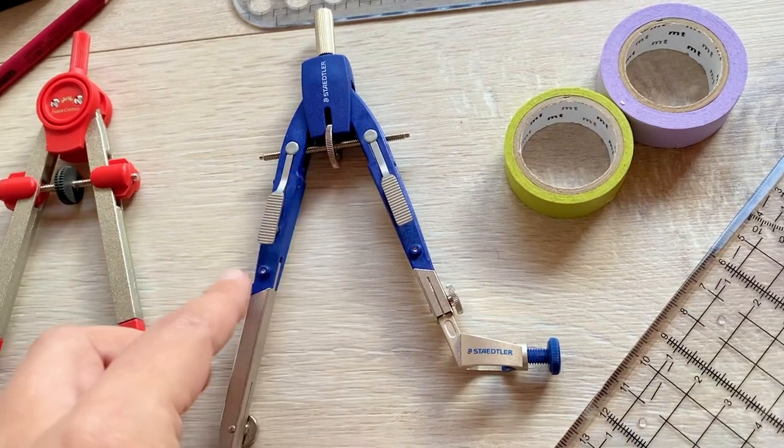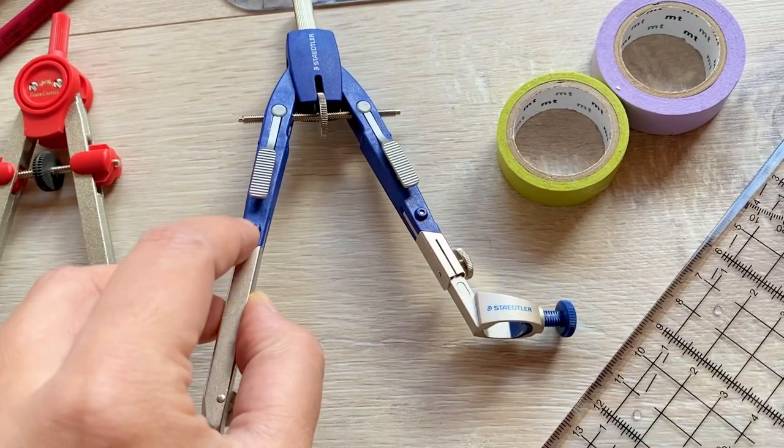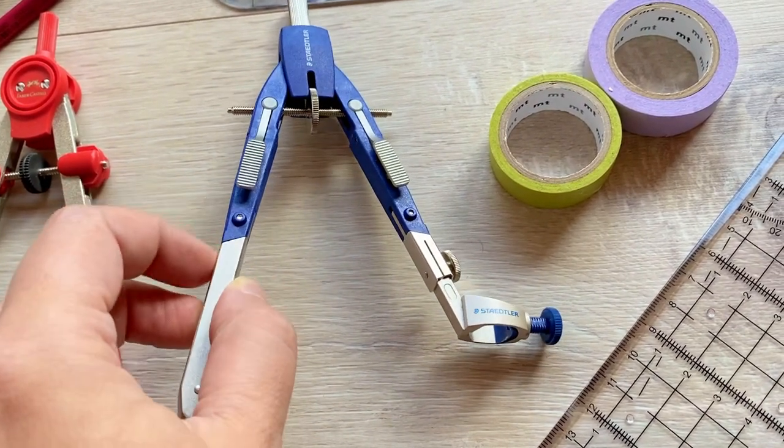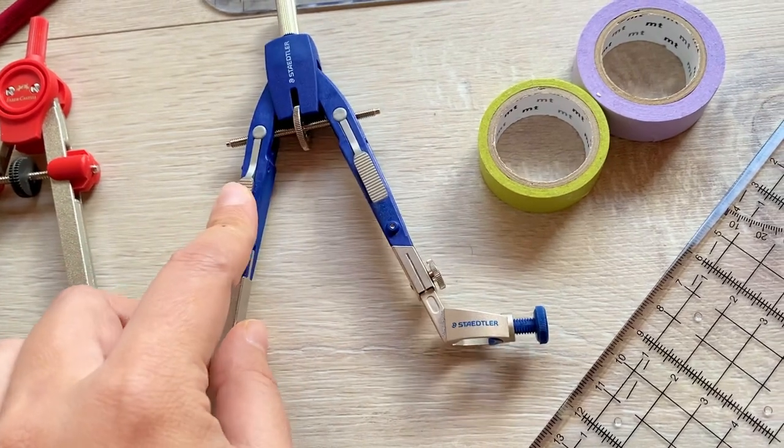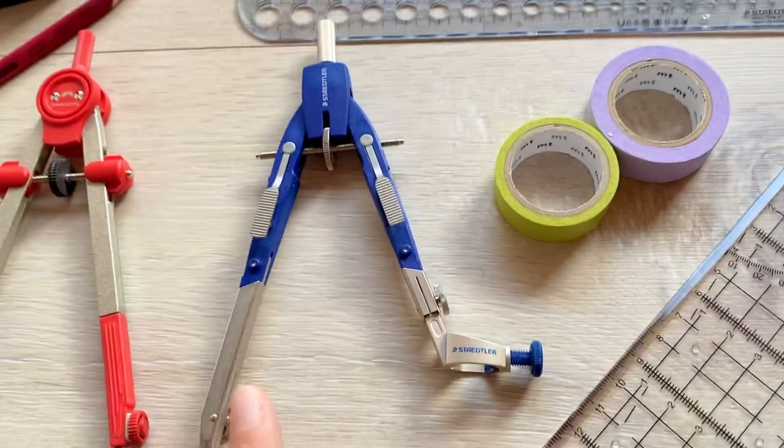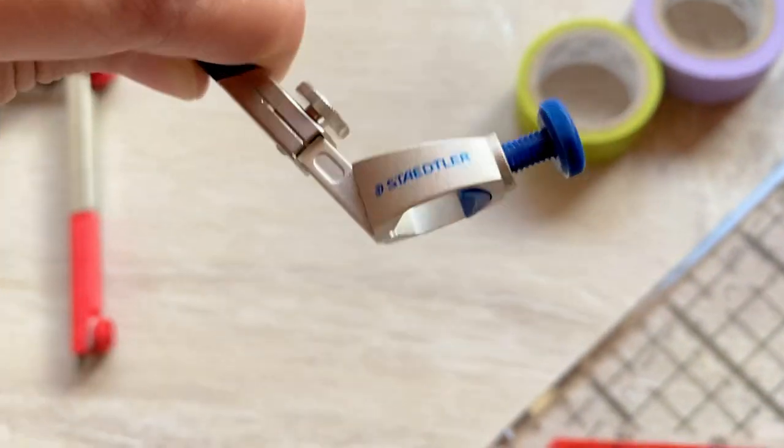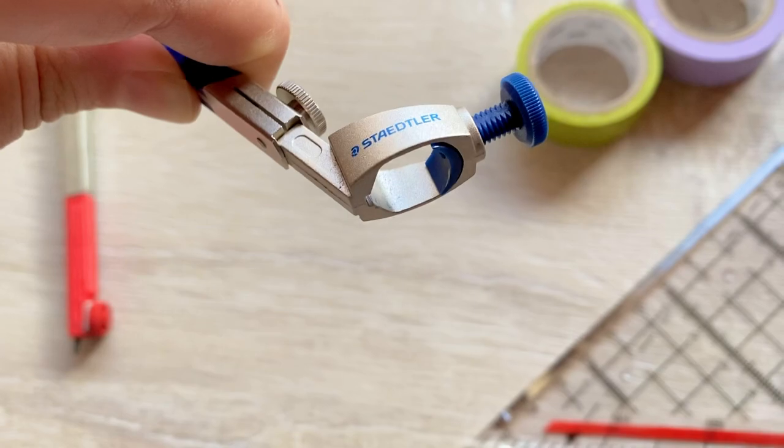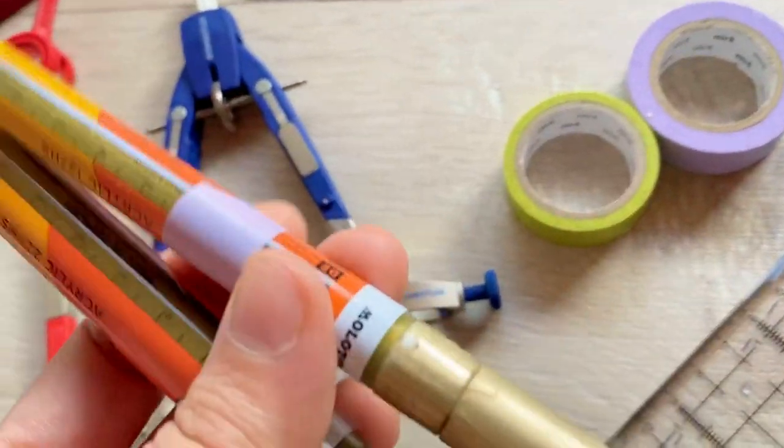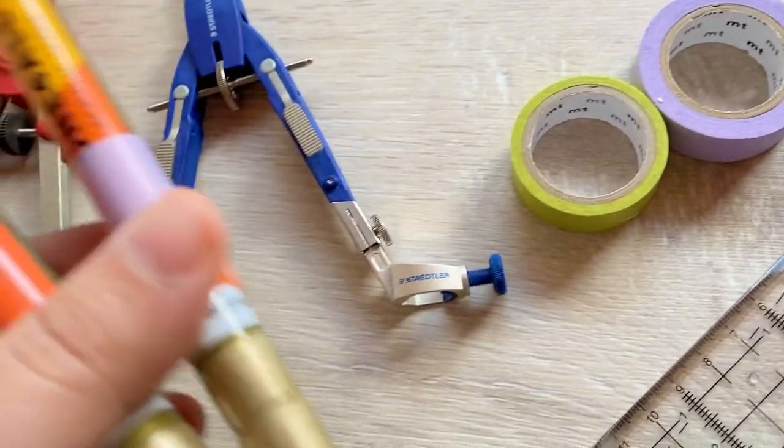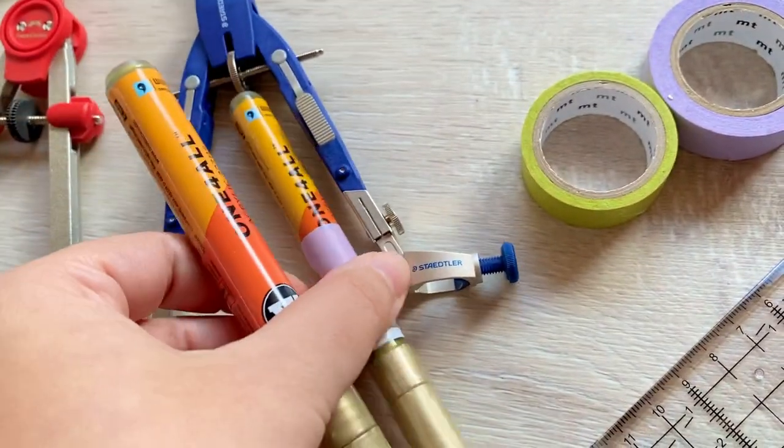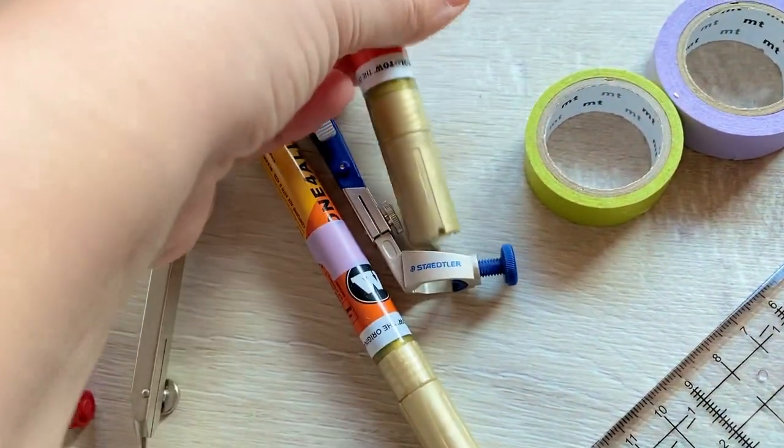Though I would advise to get the fully metal version. This is a plastic metal version, so I would not get this one but the better quality because it will be more accurate. And here you can screw in this extension and then you can have a marker in here, but only those thinner ones, the one millimeter and the two millimeter will go in there. This will not go in here.